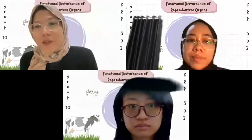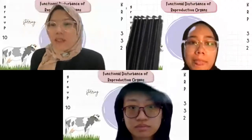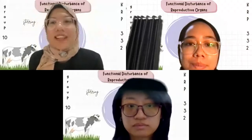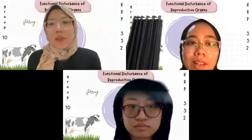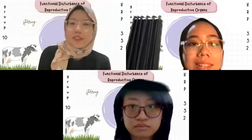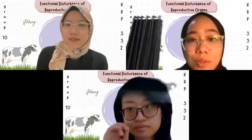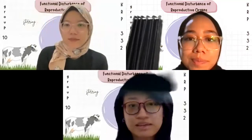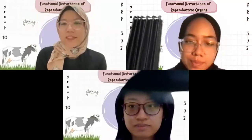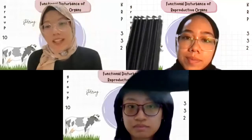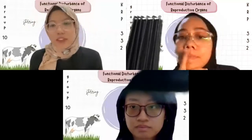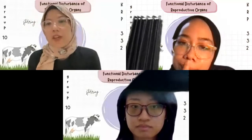As-salamu alaykum. Hello and welcome once again to our IKK UAS podcast. My name is Tengku Aisha, NIM B04198020. I'm Aisha Hanna with NIM B04198030. And I'm from group 10, NIM B04198006. We are from group 10 and this time around we will be discussing about functional disturbance of cow's reproductive organs.